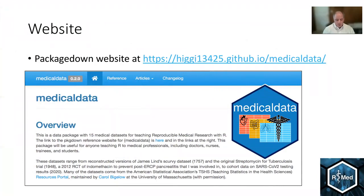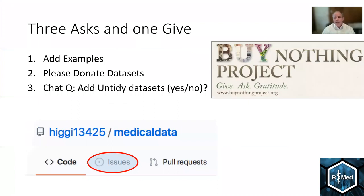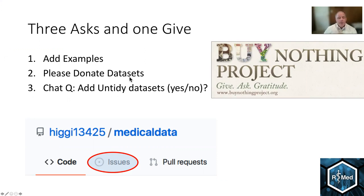From here, I've got three asks and one give in the spirit of the Buy Nothing project. I'm going to ask folks to possibly contribute and add examples — please comment in the chat if you think there are particular examples that would be helpful for teaching. A plea to donate data sets for folks who have access to anonymized data sets. And a question for folks in the chat: should I add untidy data sets?